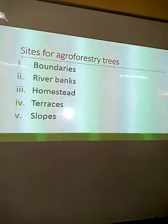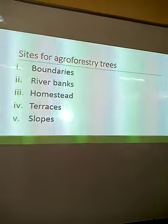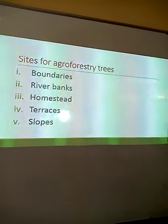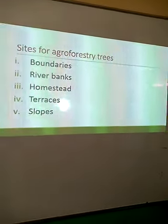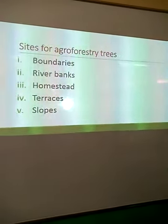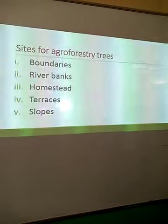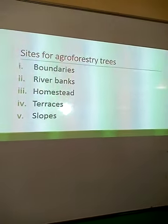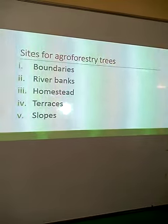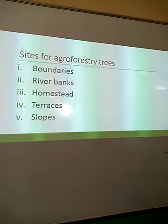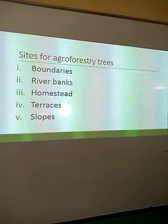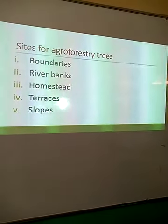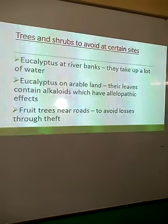Where generally do we plant agroforestry trees? The common sites include the farm boundaries, like in border planting. You can also plant them on the river banks to stabilize them. Within the homestead for aesthetic value, to make the home beautiful. On the terraces and on the slopes to help conserve soil.